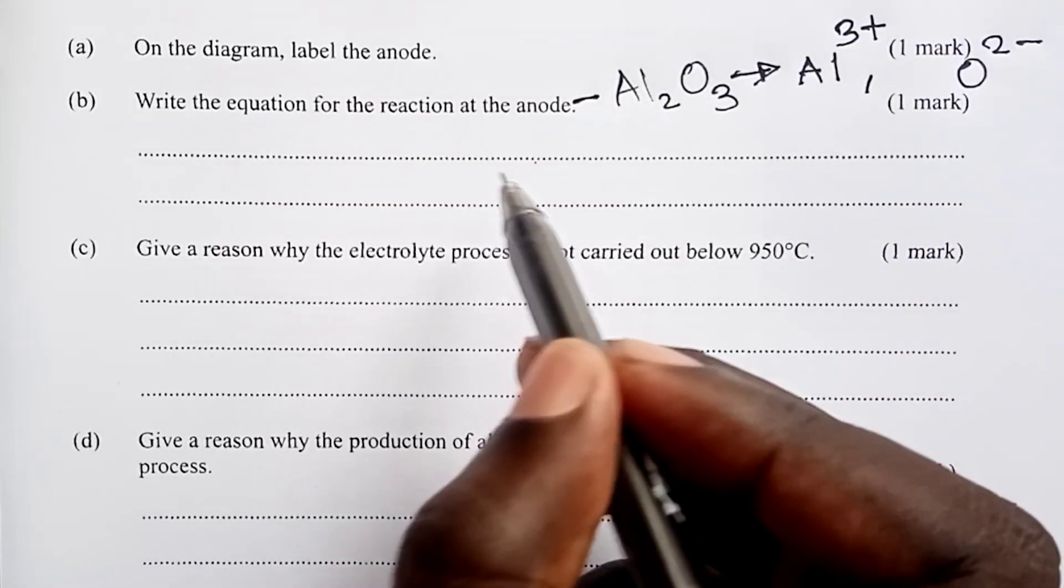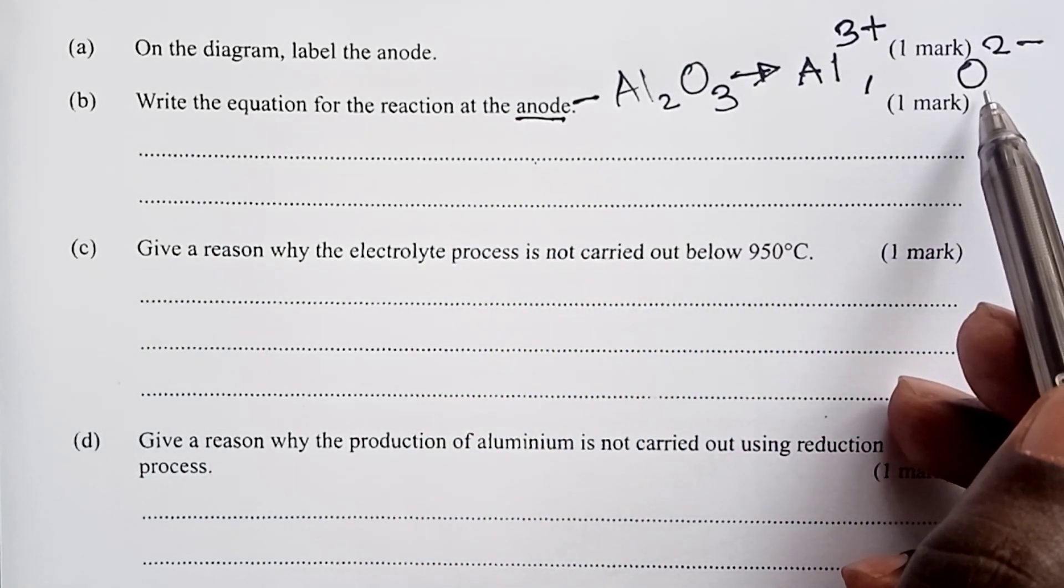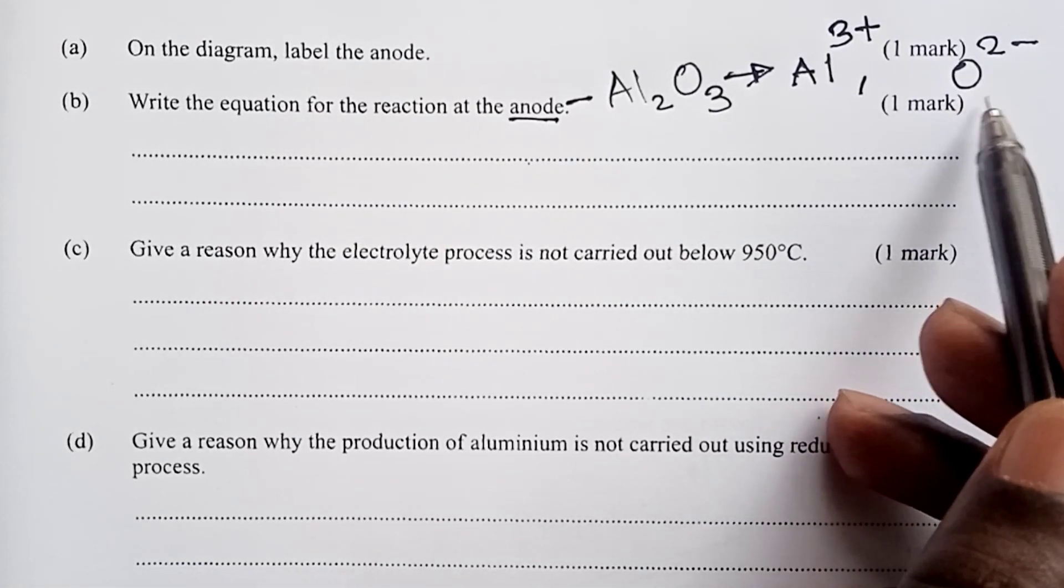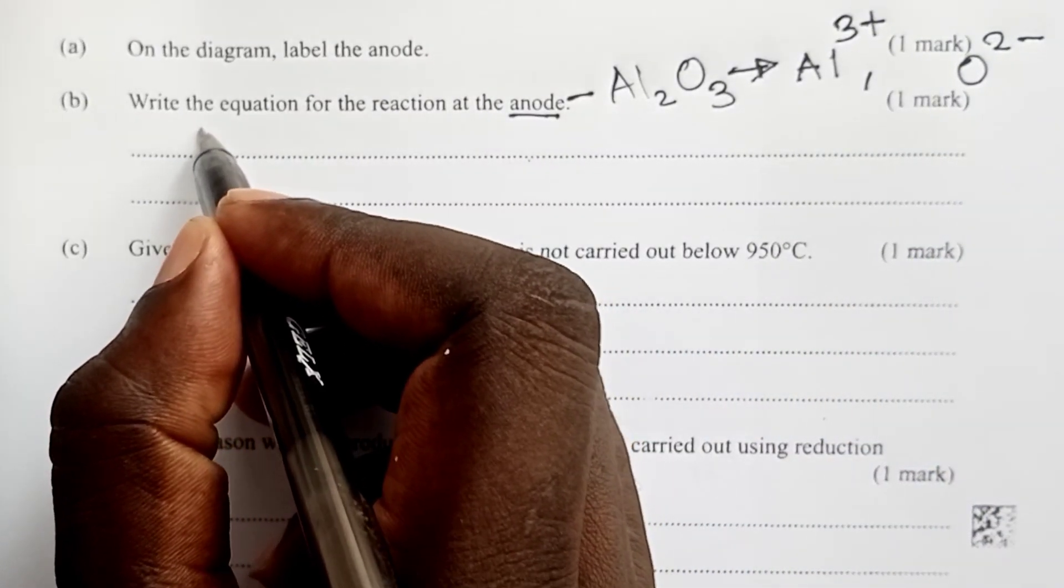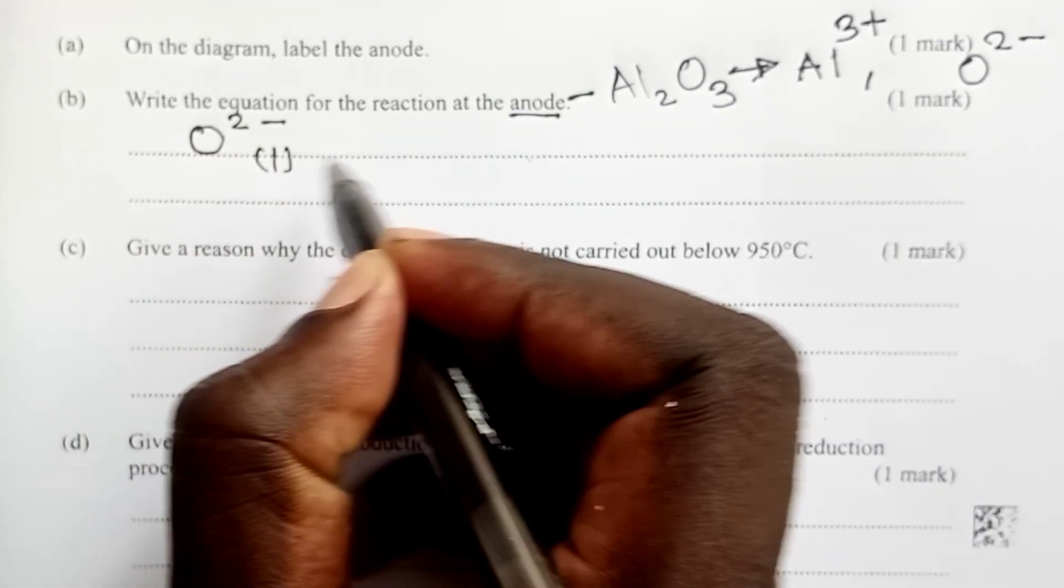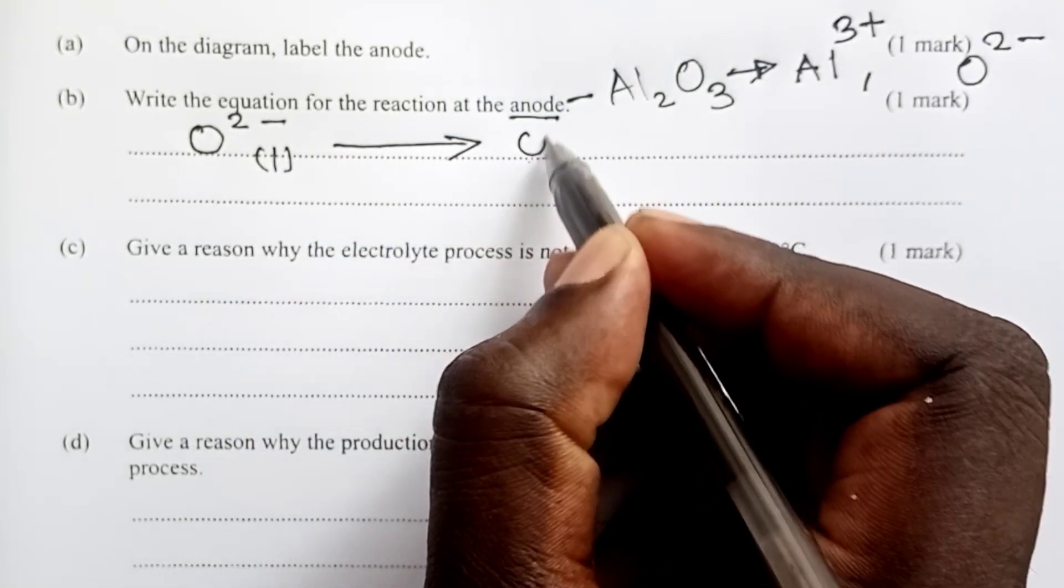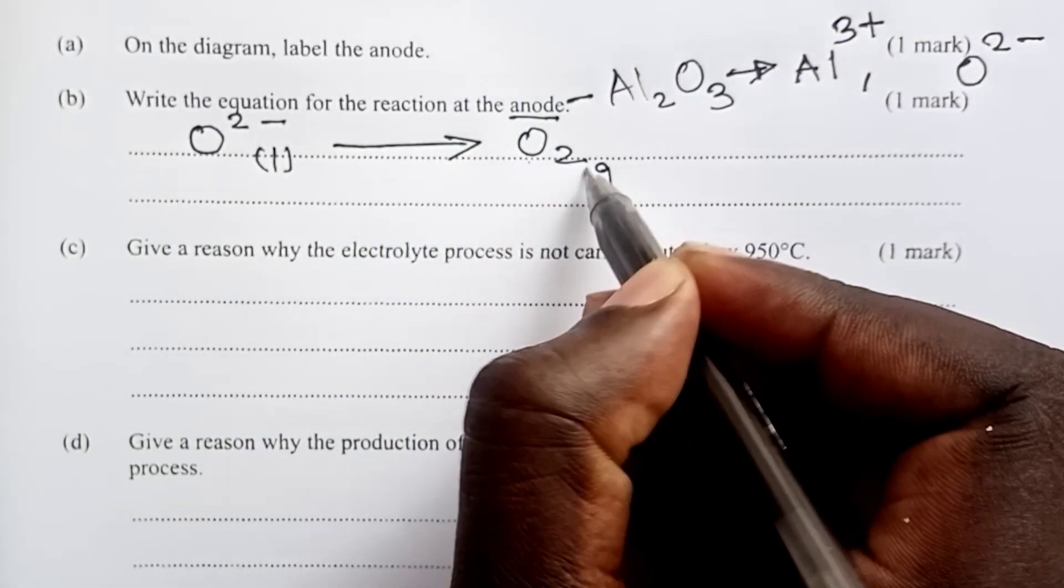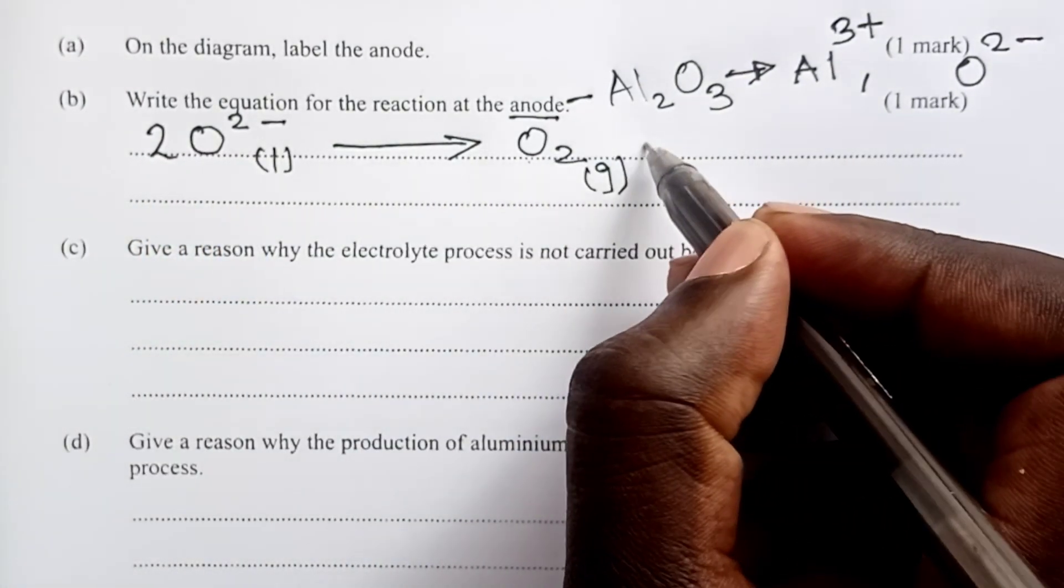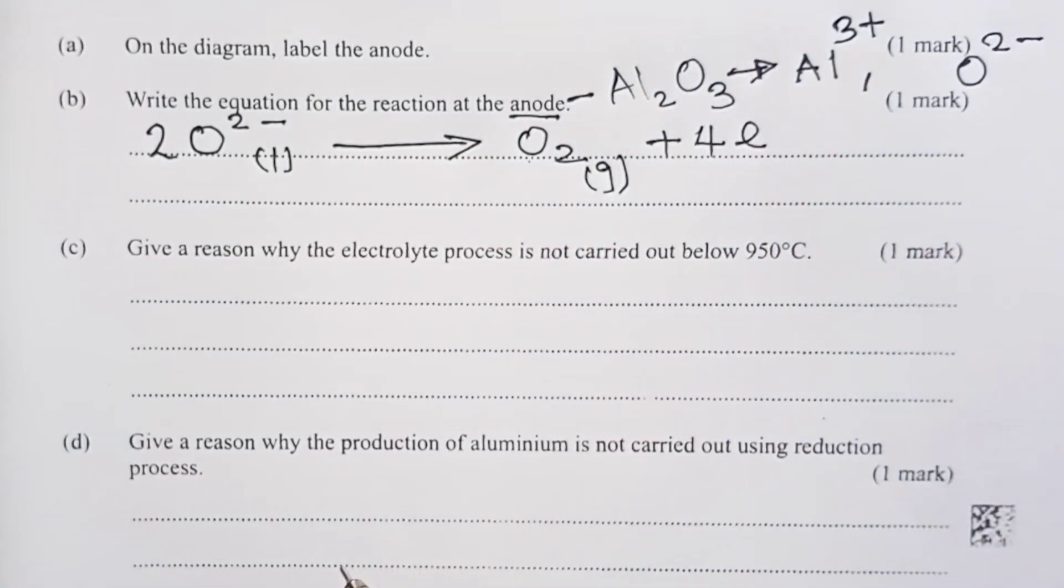When we are asked the equation at anode, we shall actually charge the oxide ions. The equation therefore becomes oxide ions in liquid state will lose some electrons to give us oxygen gas. We balance these by two here, and then it means the number of moles of electrons to be lost will be four. 2O²⁻ → O₂ + 4e⁻. This is good enough for one mark.